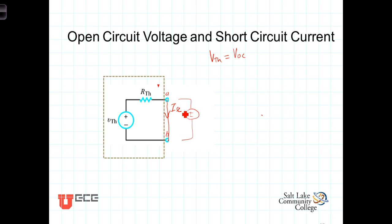And we'll notice that I short-circuit is going to equal the voltage drop, V-Thevenin, or the voltage that's dropped across the resistance, or I short-circuit is going to equal V-Thevenin divided by R-Thevenin. Thus, R-Thevenin is equal to V-Thevenin divided by I short-circuit, or the open-circuit voltage divided by the short-circuit current.